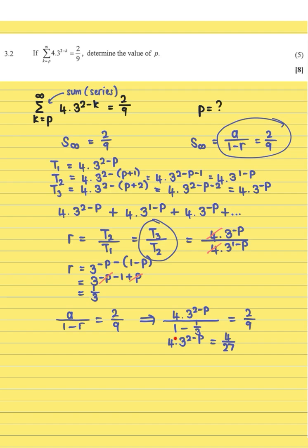You can do it in multiple steps or all in one step on the calculator. Next, you need to get rid of this 4. Since I'm multiplying by 4 on this side, I divide the other side by 4. So 4 over 27 divided by 4 gives 1 over 27. We have 3^(2-p) equals 1 over 27.